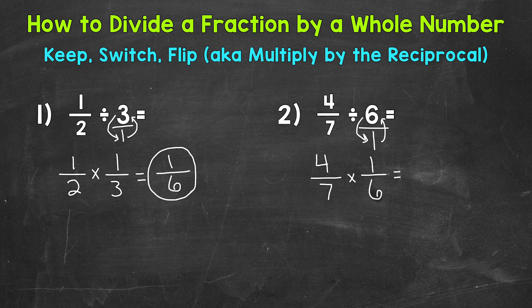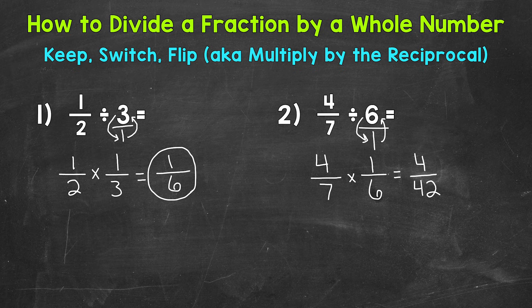And we can multiply straight across. Four times one is four. Seven times six is 42. So we get 4/42, which can be simplified.